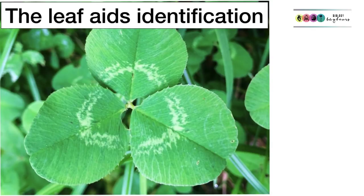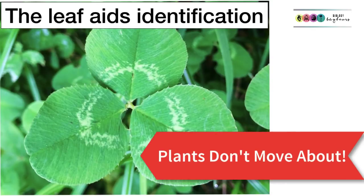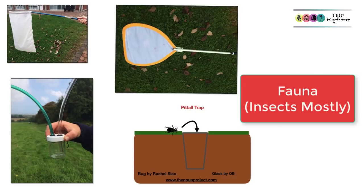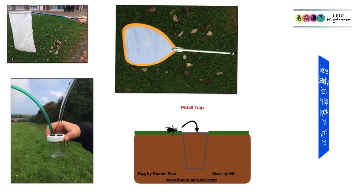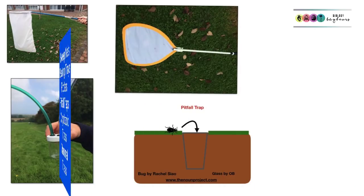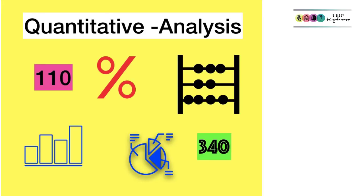The identification of plants was quite easy because they don't move about much. However, when it came to the fauna, which was mostly insects in our case, we needed key pieces of equipment in order to catch them. So we used sweep nets, beating trays, pooters, pitfall traps, cryptozoid traps, and sometimes mammal traps can be used too.